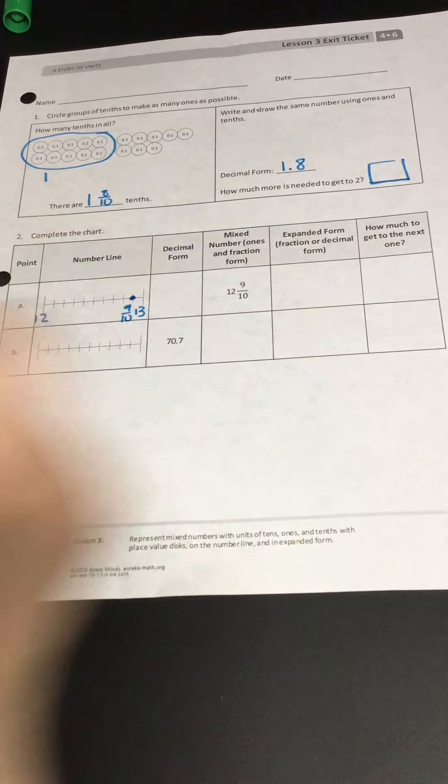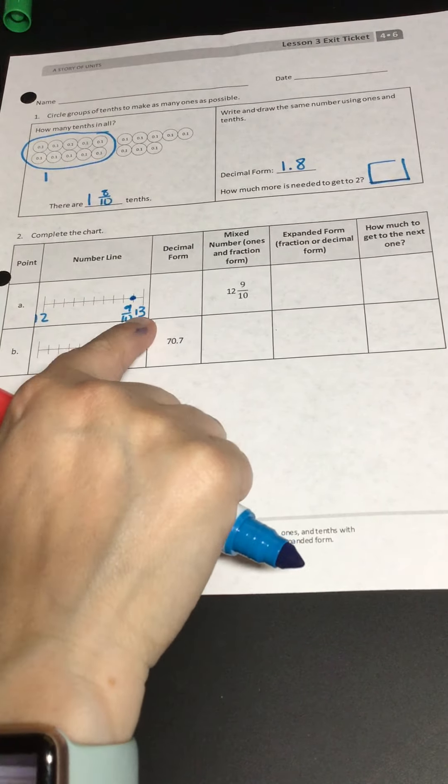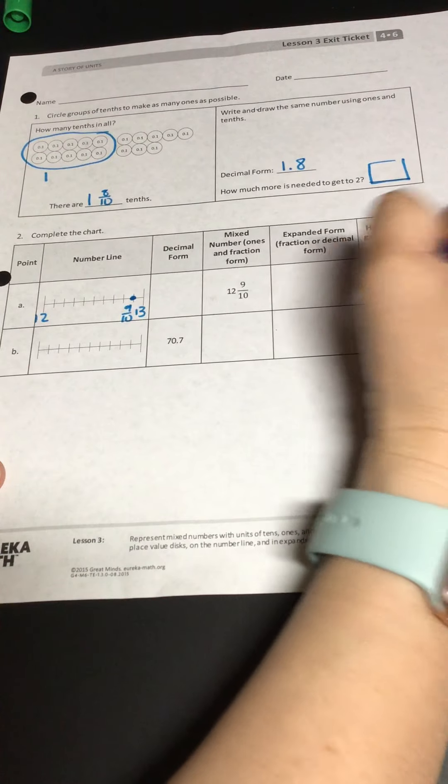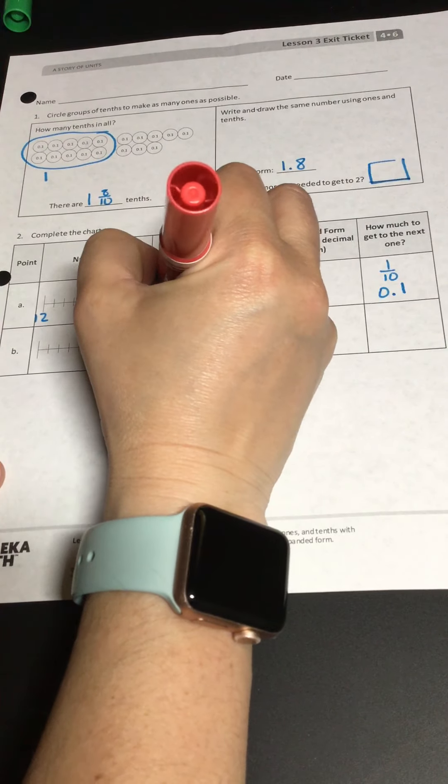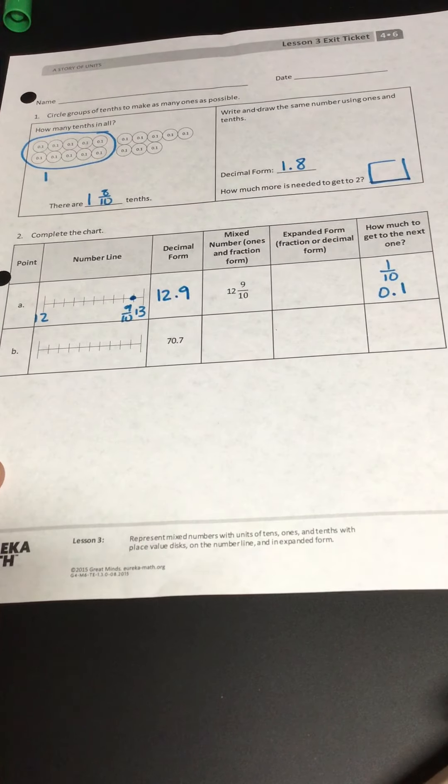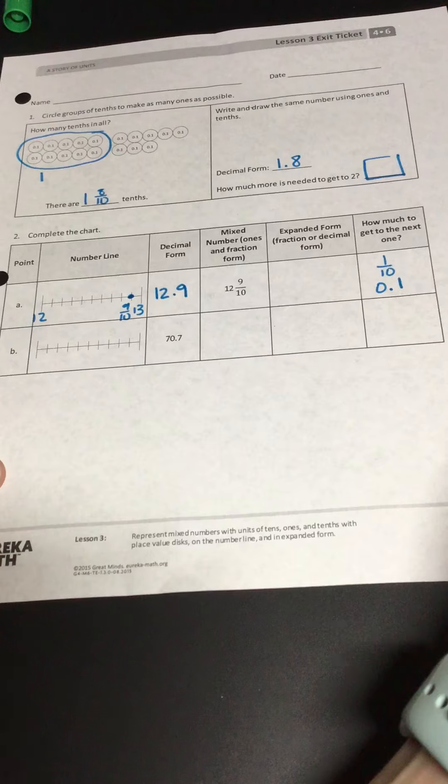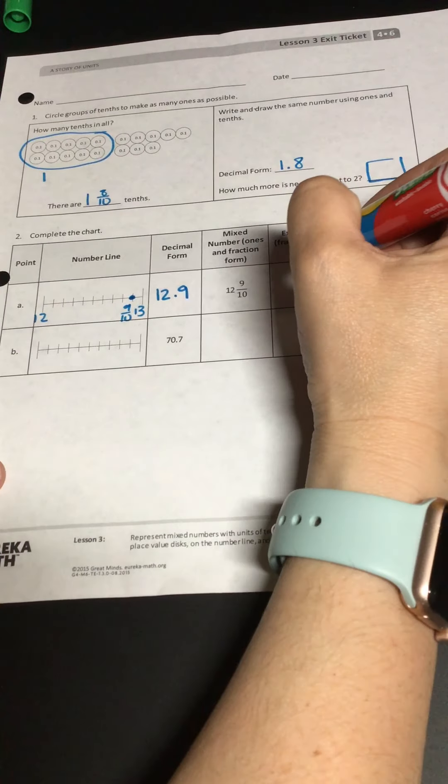You're going to write it in the decimal form. You're going to write it in expanded form and then how much to get to the next one. So if I have nine tenths, how many more to get to 13? If you said one tenth, you're correct. But don't forget to put that in decimal form too. Over here for 12 and nine tenths, it would be 12.9.